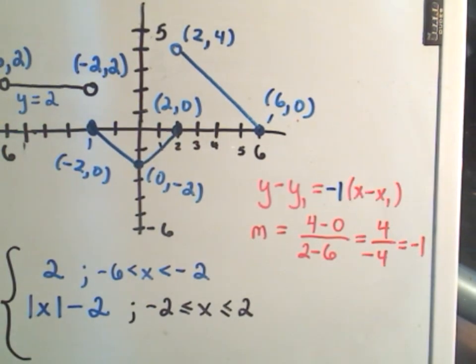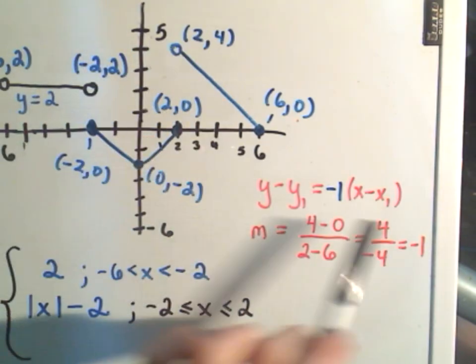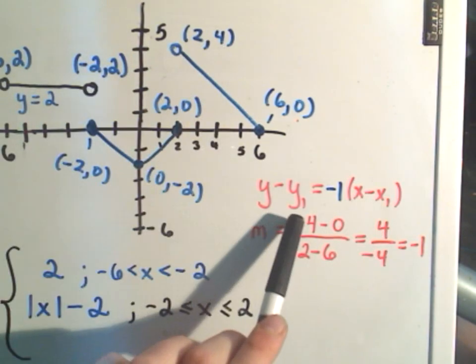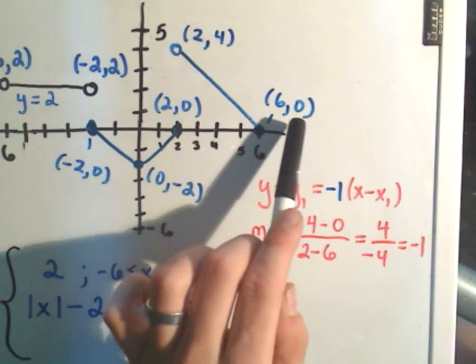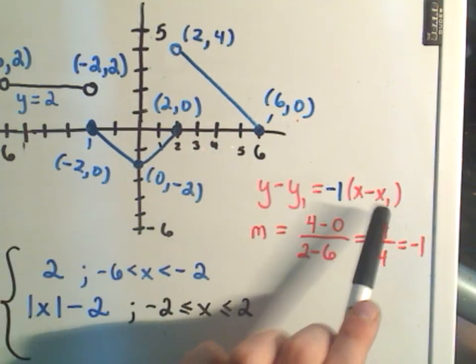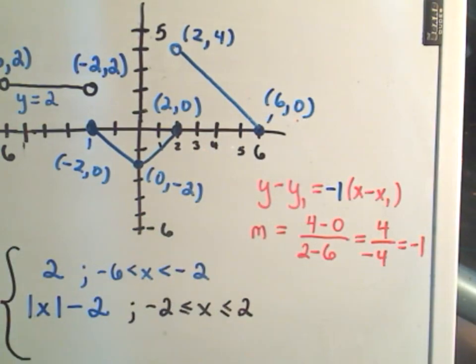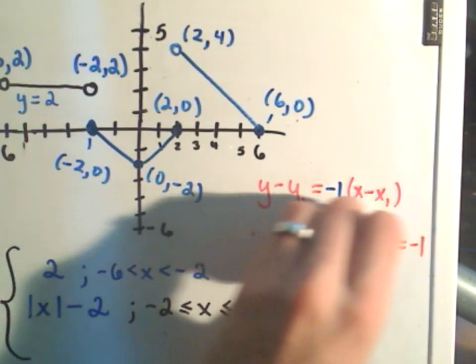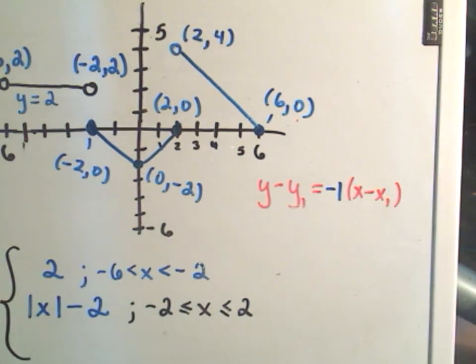And I can pick either one of these points that I want to use. I can either plug in 2 as my x₁ and 4 as my y₁, or I can pick 6 to be my x-coordinate and 0 to be my y-coordinate. And I think I'll probably use the (6, 0) because I think that'll just make things a touch easier.